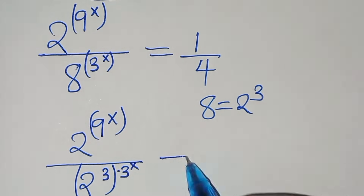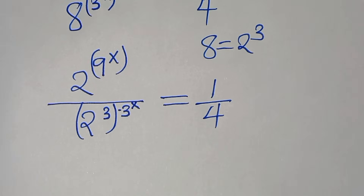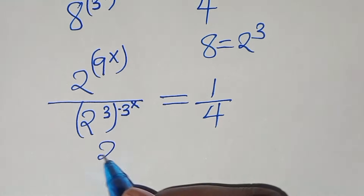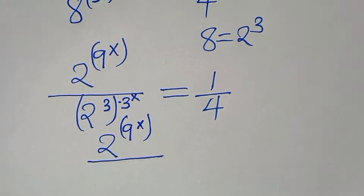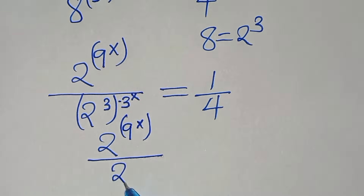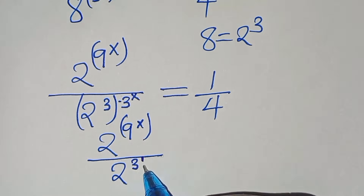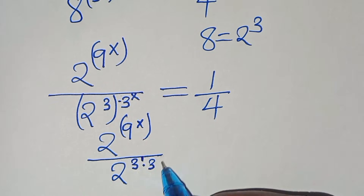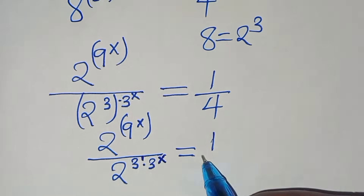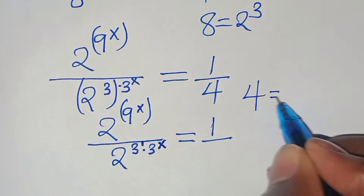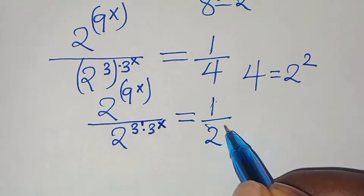This equals 1 over 4. Now we have 2 to the power of 9 raised to the power of x, divided by 2 to the power of 3 — remember this is 3 raised to the power of 1 — times 3 raised to the power of x. This equals 1 over 4. We can express 4 as 2 to the power of 2, so we have 1 over 2 raised to the power of 2.